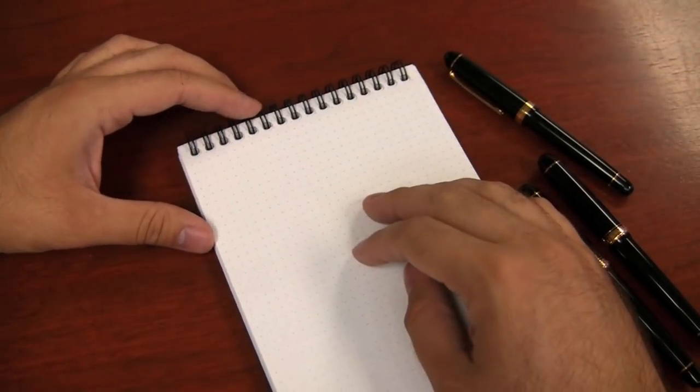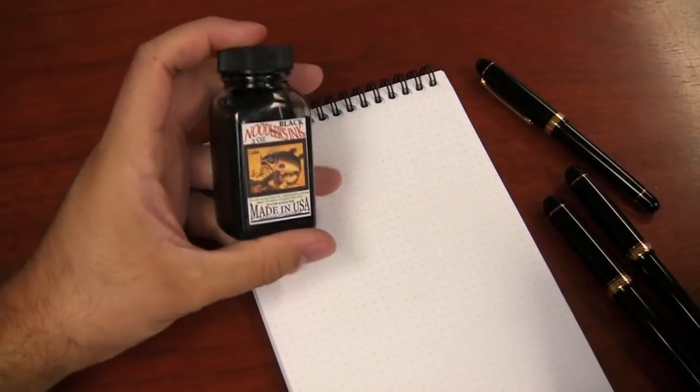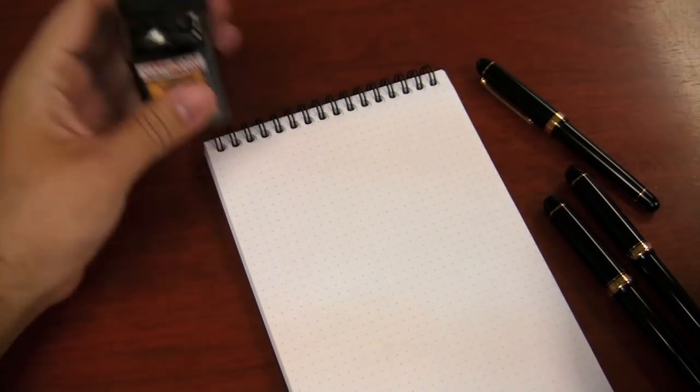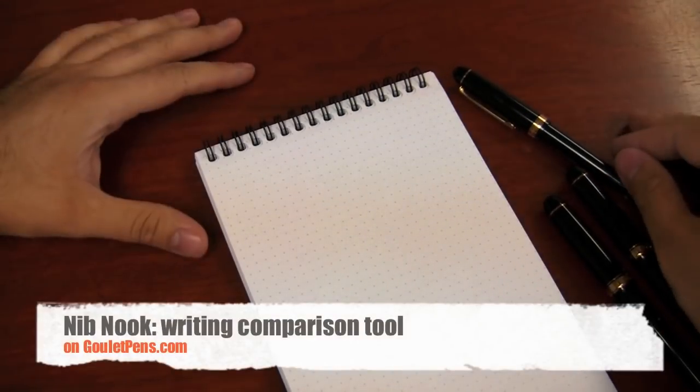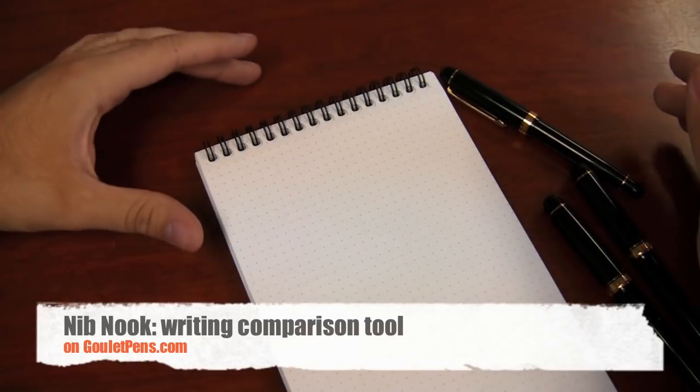I've got a Rhodia dot pad paper here, 80 gram, nice ink resistant stuff. The ink that I'm using is Noodler's Black, right here. The Bulletproof Black as it's known by many. This is the ink that I use in the Nib Nook. So while I still had the pens inked up from that, I thought I'd go ahead and just show you a live writing sample of each of the three pens. So here we go. Let me zoom in a little bit.